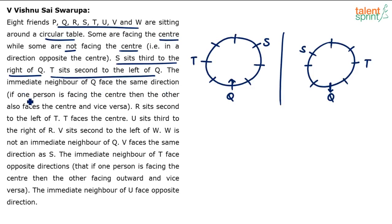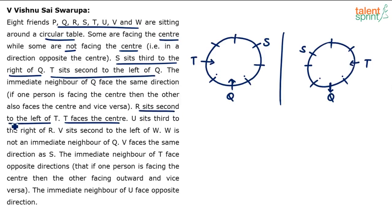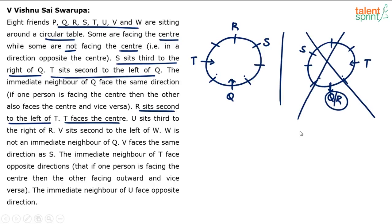The immediate neighbors of Q face the same direction. Next: R sits second to the left of T. And we know T faces the center — so fix that. Since T is facing center, left is clockwise. Counting first and second, R comes to a position. But in the second case, this would place R in the same position as Q, which is impossible. So we eliminate that case.